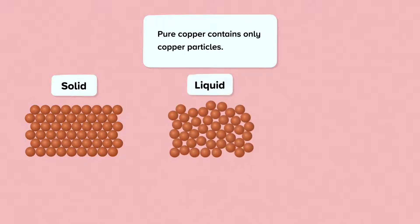In liquid copper the particles would be arranged randomly but still very close together. In copper gas the particles will be arranged randomly but very far apart. All of these are copper particles — all copper, no matter what state it is in, is made up of just copper particles.